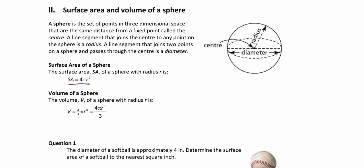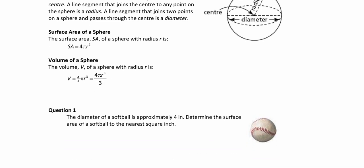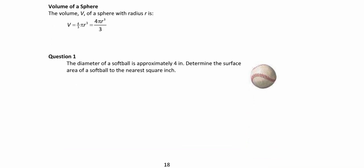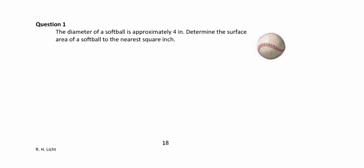The formula for the surface area of a sphere is four times pi r squared, and the volume of a sphere is four-thirds pi r cubed. It might also be written as four times pi r cubed divided by three — they mean the same thing. These are on your formula sheet, so you don't need to memorize them.